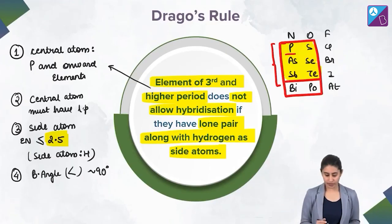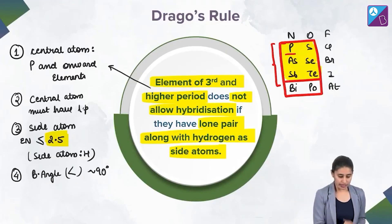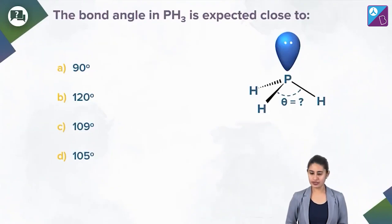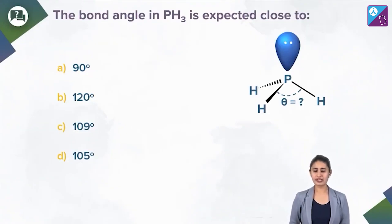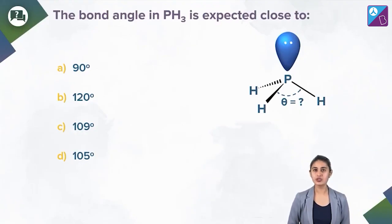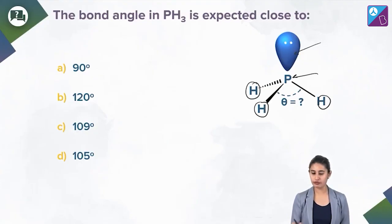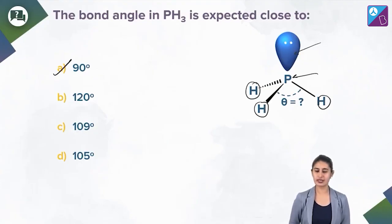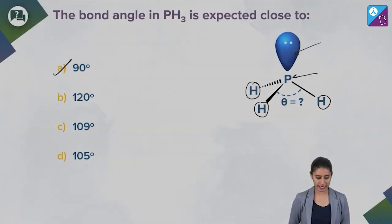Now, can you answer this question? The bond angle in PH3 — we just discussed PH3. You know the rule: it's a Drago compound. See the lone pair, see the side atoms, see that it's phosphorus. Of course, theta will be close to 90 degrees. So the right answer is option A.